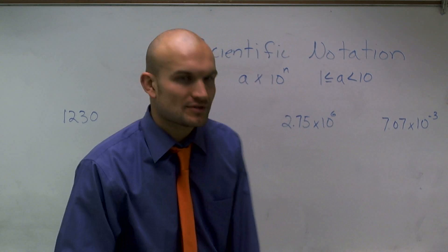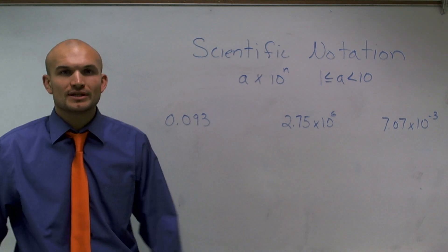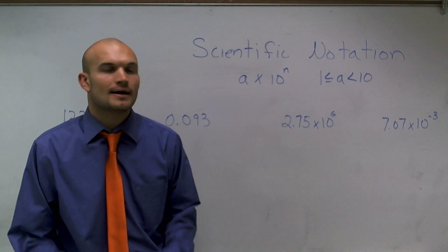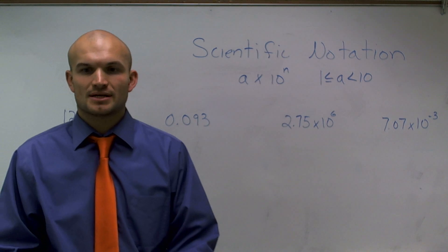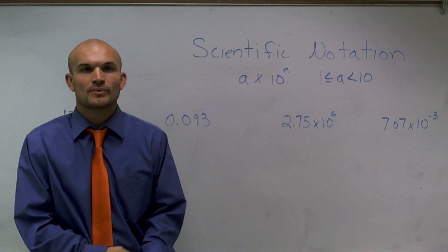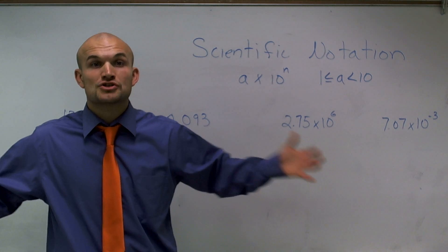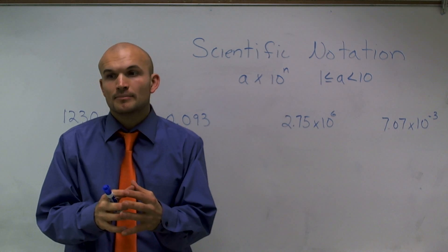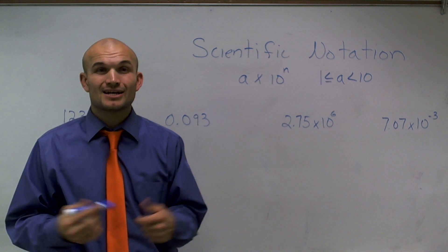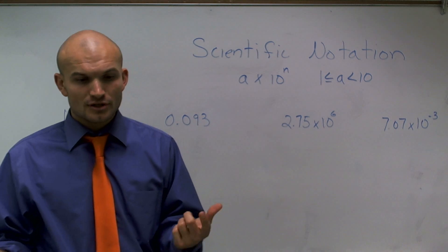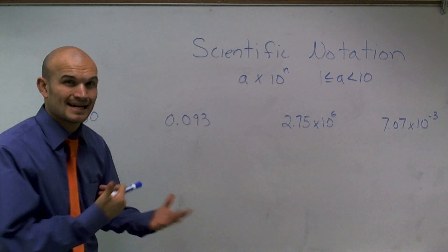Now, the reason why we use scientific notation is really to simplify a number. I'm going to work with some simple numbers here, but the whole purpose of scientific notation is when we're using very, very large or very, very small numbers that we need a convenient way to write them and also to do operations with them, like adding and subtracting.